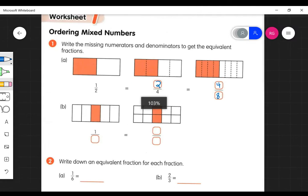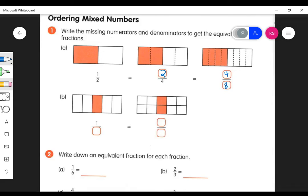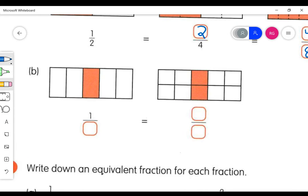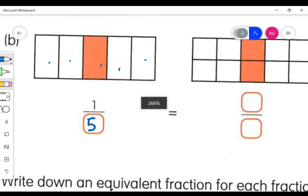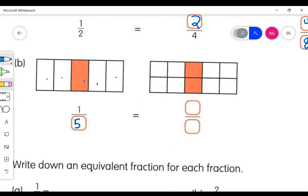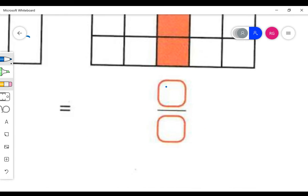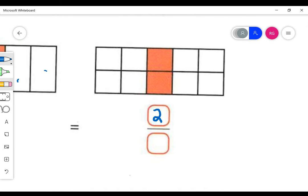For the next one, B, looks like I have one part out of a total of five, so my denominator should be five. All right, for the next one, I have two parts filled in. That'll be my numerator, and that's a total of one, two, three, four, five—so that's ten for my denominator.